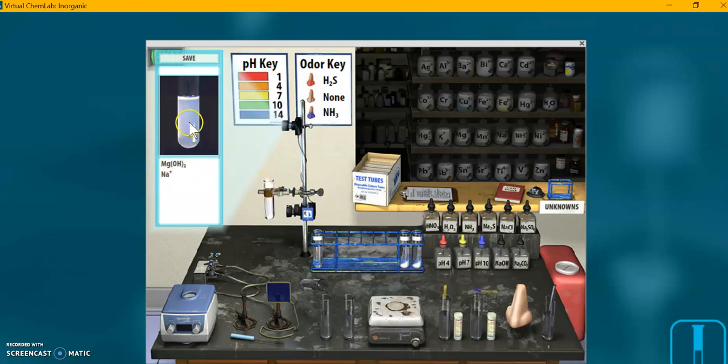And we seem to have cloudiness, another sign of a precipitate. We can see the chemical list, magnesium hydroxide, a precipitate. So we've shown that we have magnesium in there.